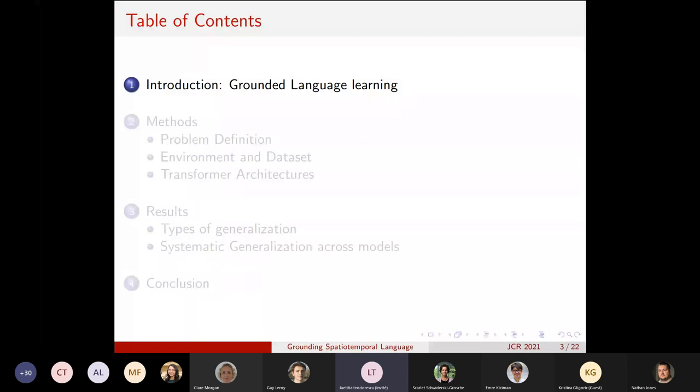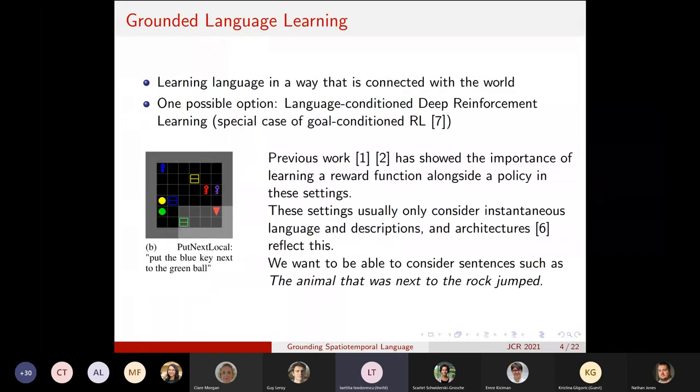First, we will introduce the work by saying that it is part of grounded language learning, a subfield of AI. Grounded language learning is about learning language in a way that is connected with the physical world. Traditionally, natural language processing is concerned with linguistic input only, but in grounded language learning, it is important to try to connect this language with the physical world.